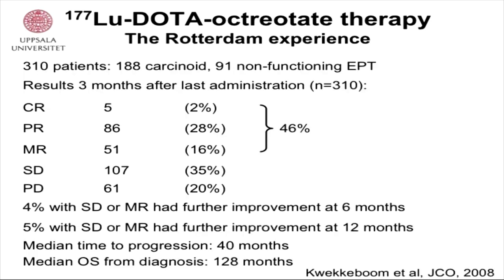Here are the results from the Dutch group three months after the last administration: a response rate of 30%, and including minor responses, 46%. Another 35% had stable disease. Importantly, patients with stable disease or minor response may have further improvement up to 12 months after treatment. They had a median time to progression of 40 months and a median overall survival of more than 10 years.